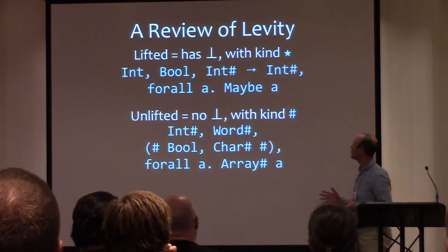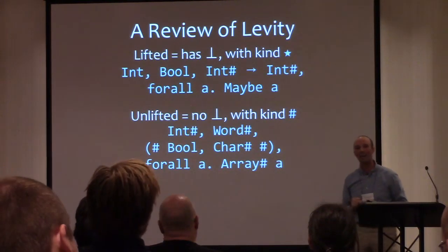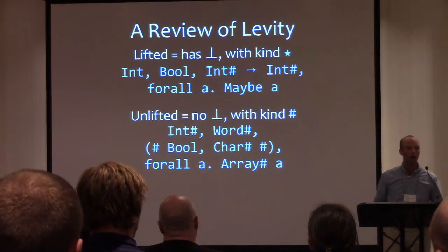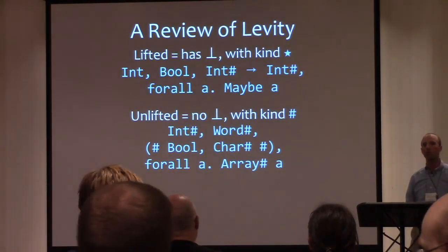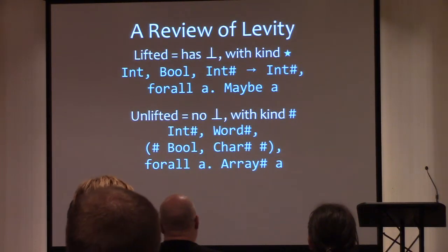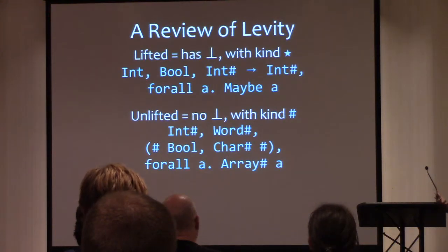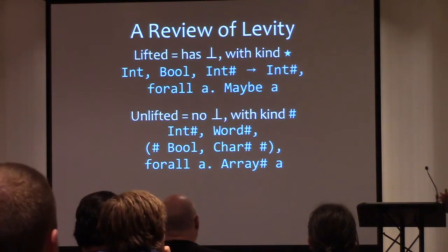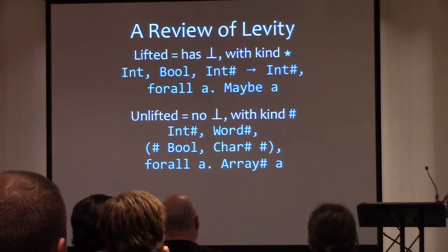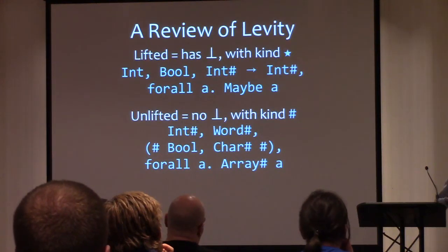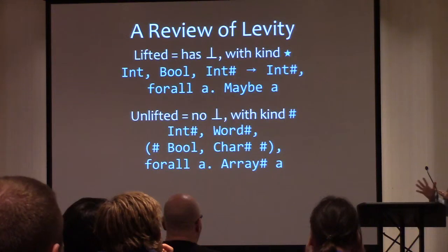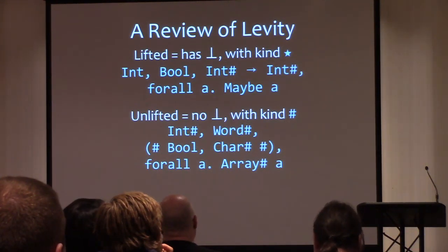We can also have polymorphic types like forall a, Maybe a — these are all lifted. Unlifted types don't have a bottom. In the kind system, unlifted types have kind hash (#), as opposed to lifted types which have kind star (*). There's a modest collection of built-in unlifted types — you can't make your own. But some are parameterized, like unboxed tuples, which can actually contain a lifted type. Lifted types must be stored using a pointer because they could be a thunk at runtime, whereas unlifted types can be represented directly. Lifted implies boxed, but the converse doesn't hold: unlifted doesn't necessarily imply unboxed.